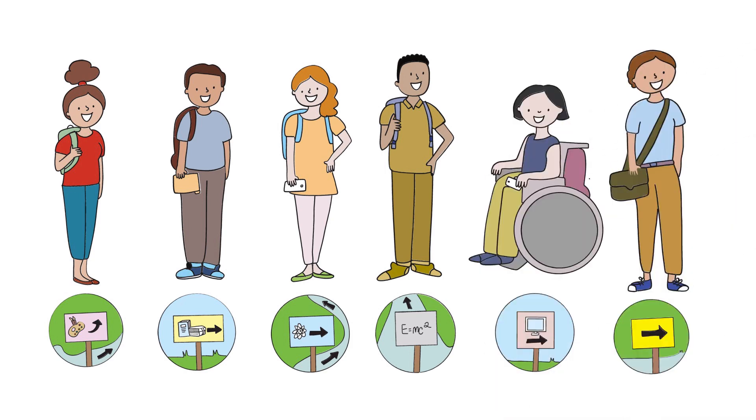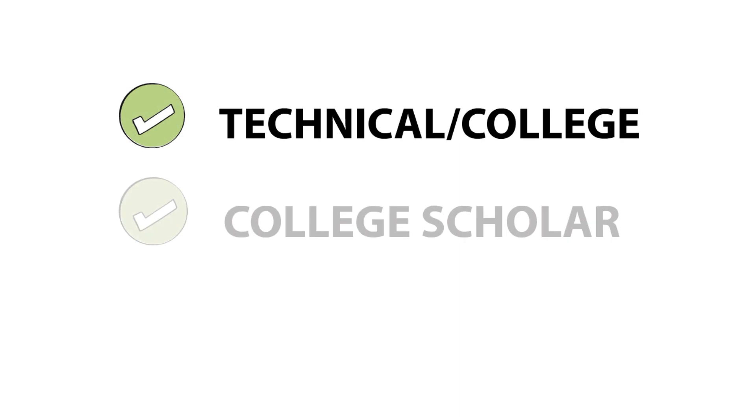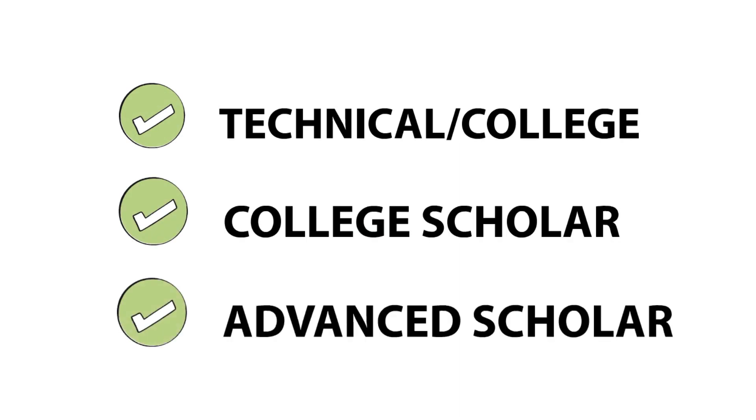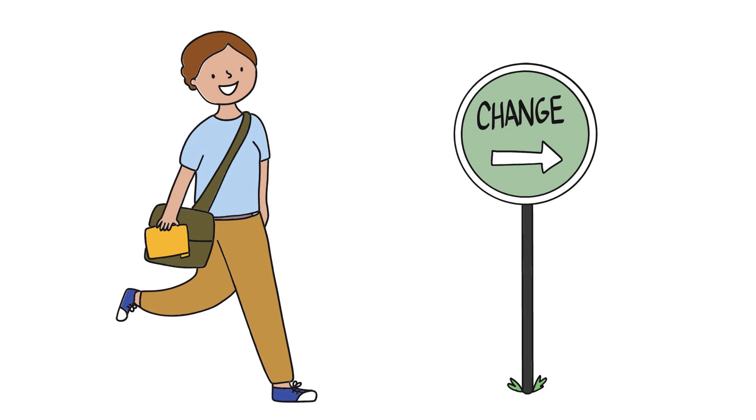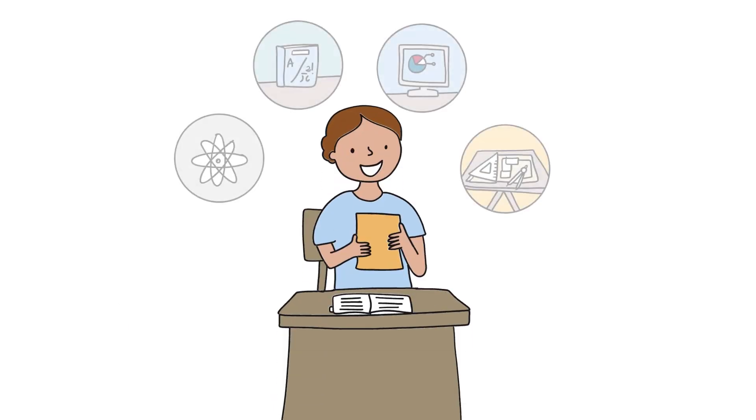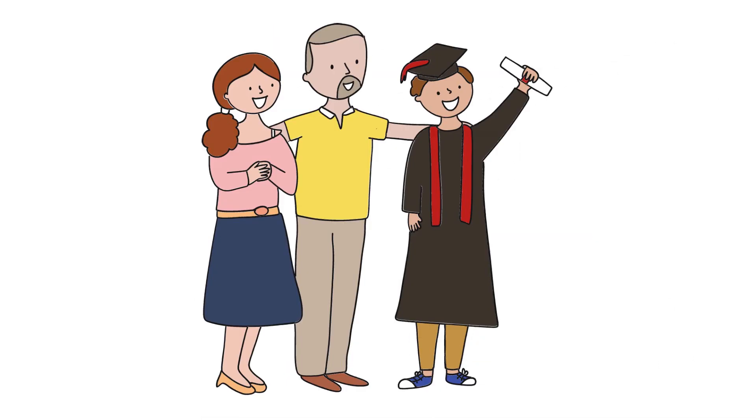The three pathways are Technical College, College Scholar, and Advanced Scholar. Sam can change pathways or combine courses from more than one pathway. Sam can stay on the same pathway until graduation day.